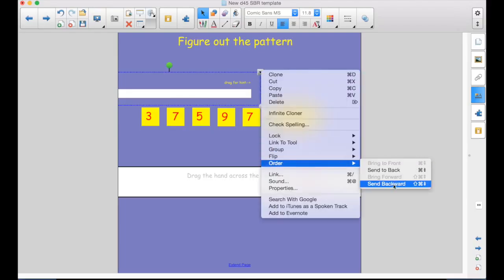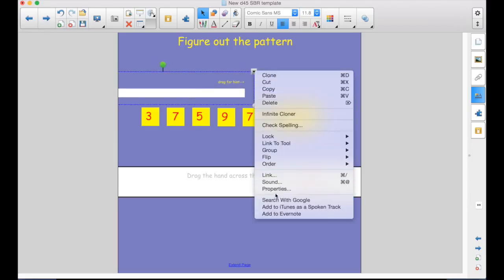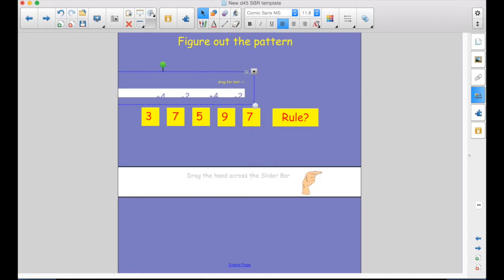If I send it backward, each of those numbers are going to be in different layers. I'm going to have to do that many times. To me, the easiest, send it all the way to the back since it has to be beneath all of them. And now it works.